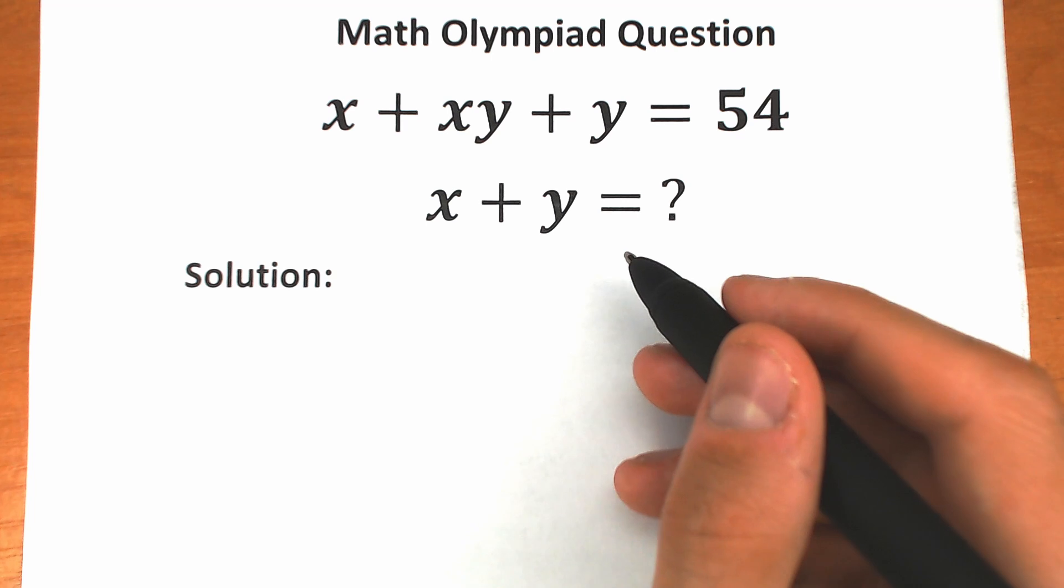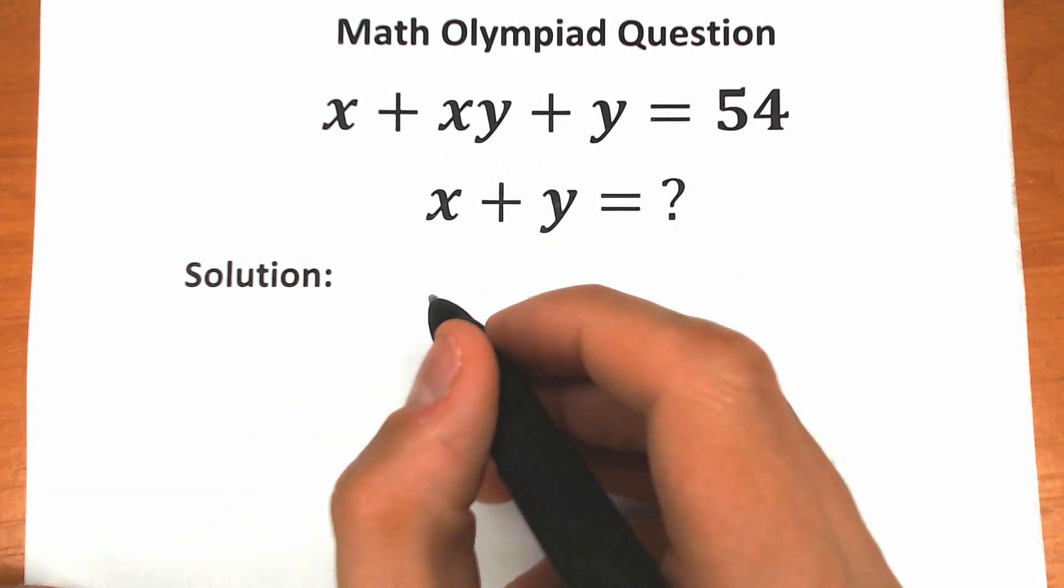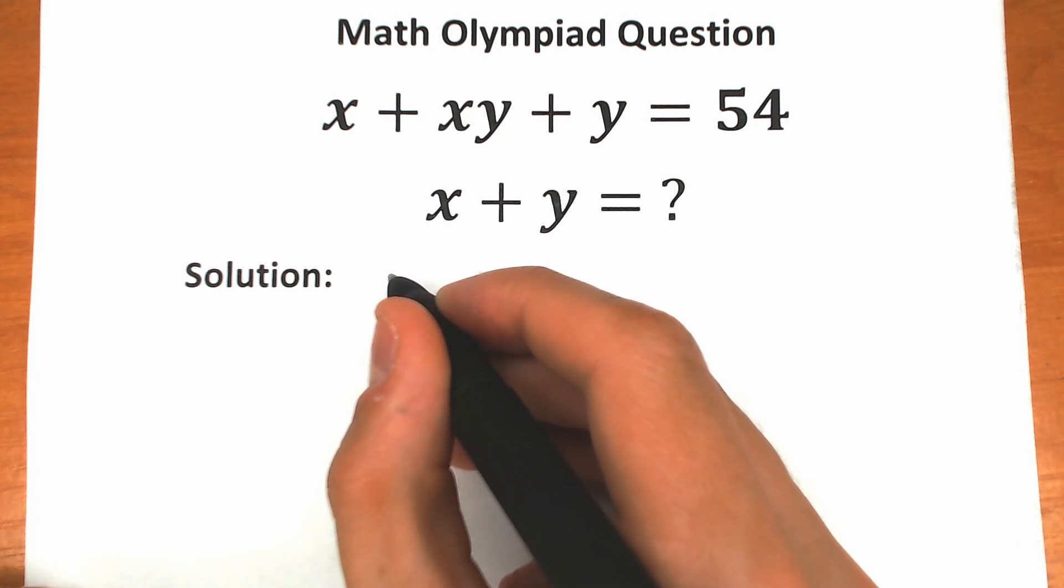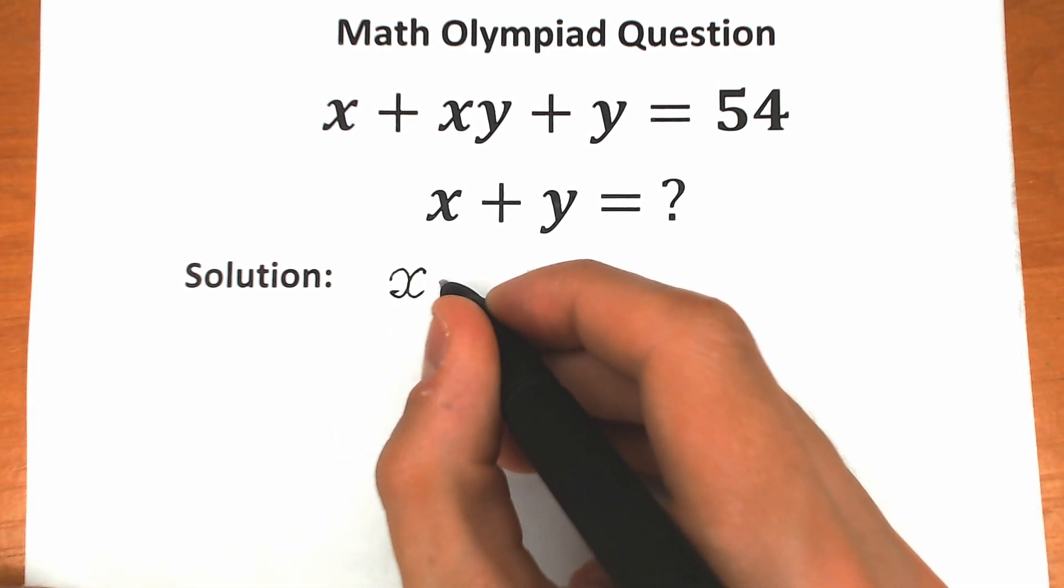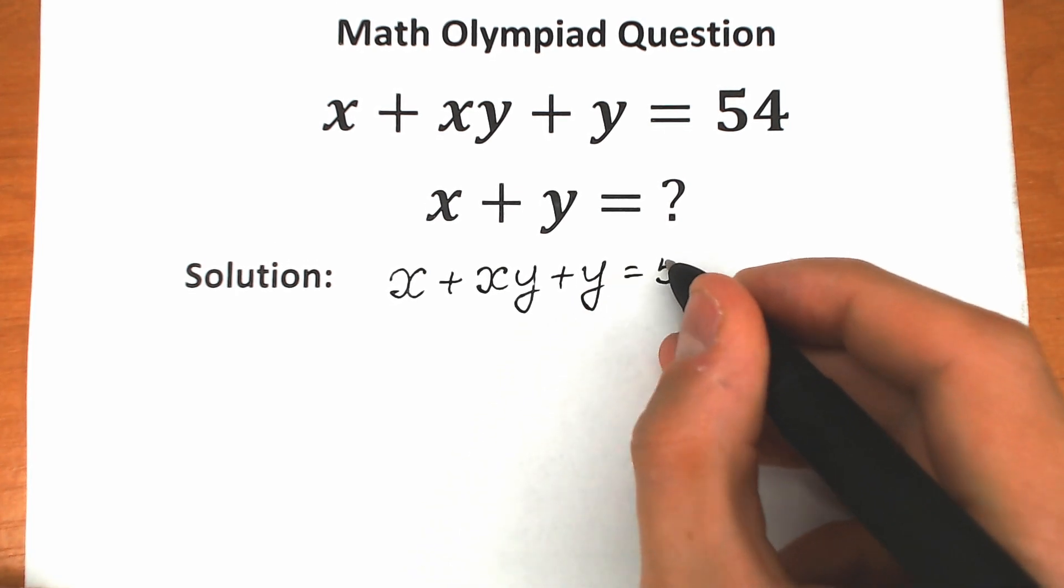In this video I'm going to fully explain how you can do this correctly and step by step. First of all, let's rewrite our challenge. We have x plus xy plus y equals 54.